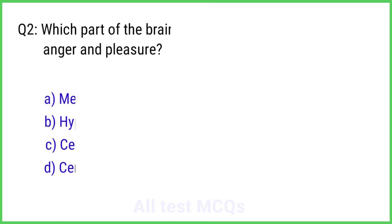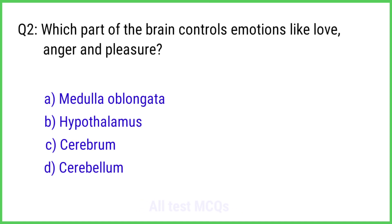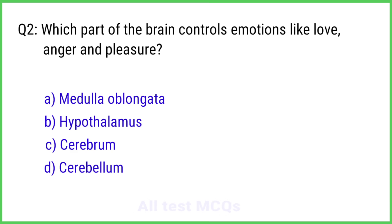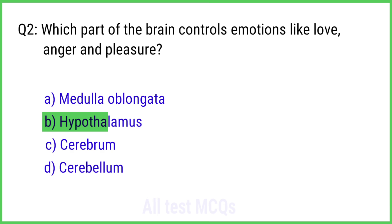Question No. 2. Which part of the brain controls emotions like love, anger, and pleasure? The right answer is Option B: Hypothalamus.